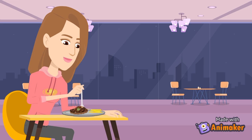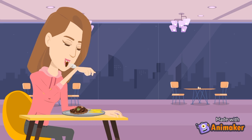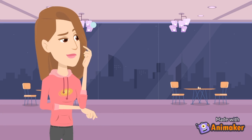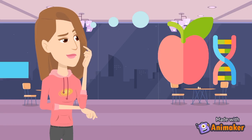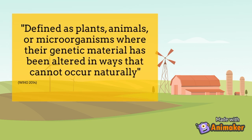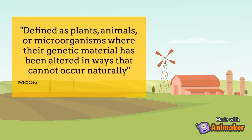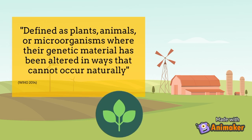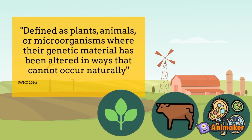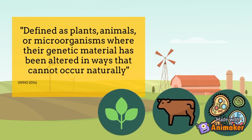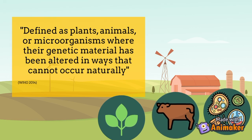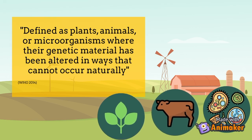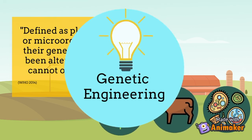Most of us have heard the term GMO, but what does that mean? How does that play a part in the society we live in? Well, let's do some deep diving, shall we? GMO, or genetically modified organisms, can be defined as plants, animals, or microorganisms that have had their genetic material altered in ways which cannot occur naturally, in a process known as genetic engineering.